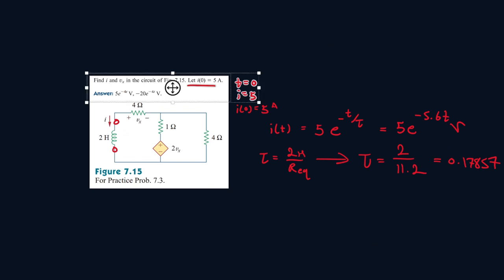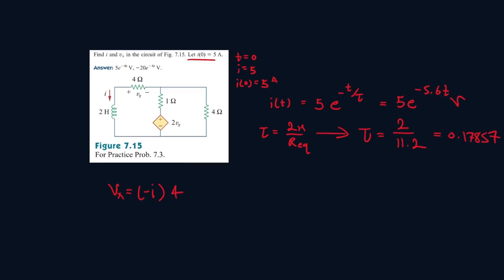Vx is actually going to be pretty easy. So we see Vx will be equal to the current passing through it. But the current passing through it is entering from the negative terminal. So it will be minus i times the resistance, which is 4. And we know what i is. This is the formula for i. So it will be minus 20e to the power of 5.6t.